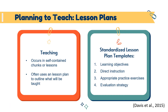This brings us to planning to teach. Davis talks about how within standardized education, teaching occurs in self-contained chunks or lessons, and lesson plans outline what will be taught. A standardized lesson plan template often includes learning objectives — which should be observable and measurable, often pulled from mandated curriculum guides — direct instruction such as a lecture, an appropriate practice exercise, and an evaluation strategy related to those pre-stated learning objectives. A critique of standardized lesson plans is that they can be quite rigid and mechanistic. How does the teacher deviate from the plan if needed, given lessons may be allocated to specific blocks of time?